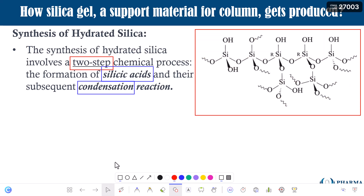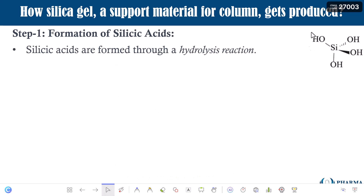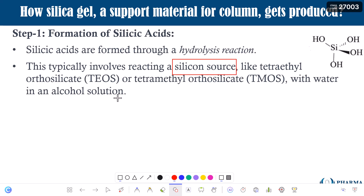Let us begin with the first step: the formation of silicic acid. The structure of silicic acid is shown on the top right side. Silicic acids are formed through a hydrolysis reaction, which typically involves a reaction between a silicon source — like tetraethyl orthosilicate (TEOS) or tetramethyl orthosilicate (TMOS) — and water.